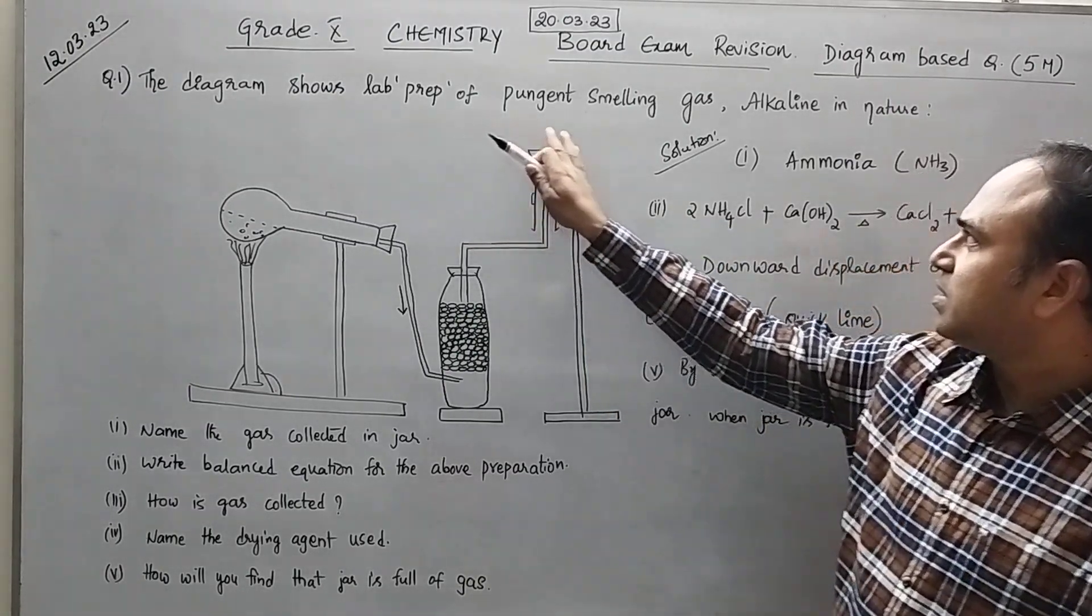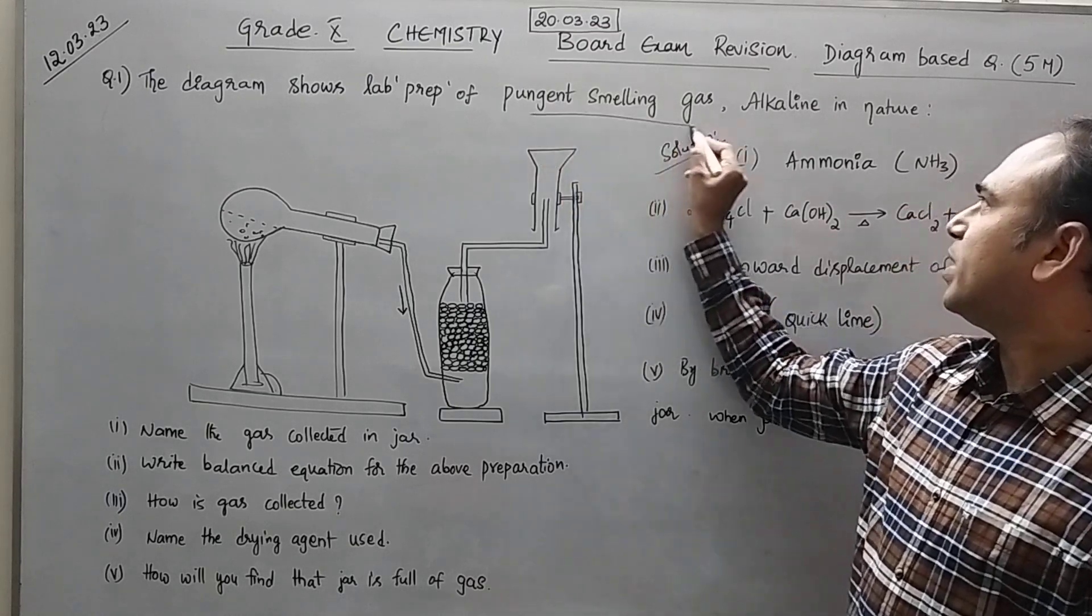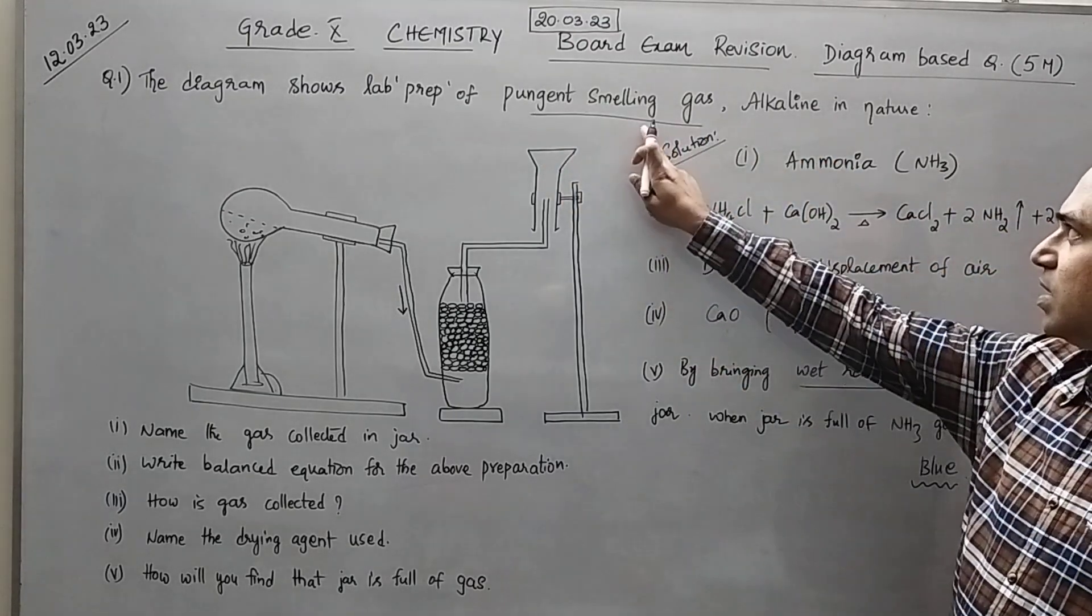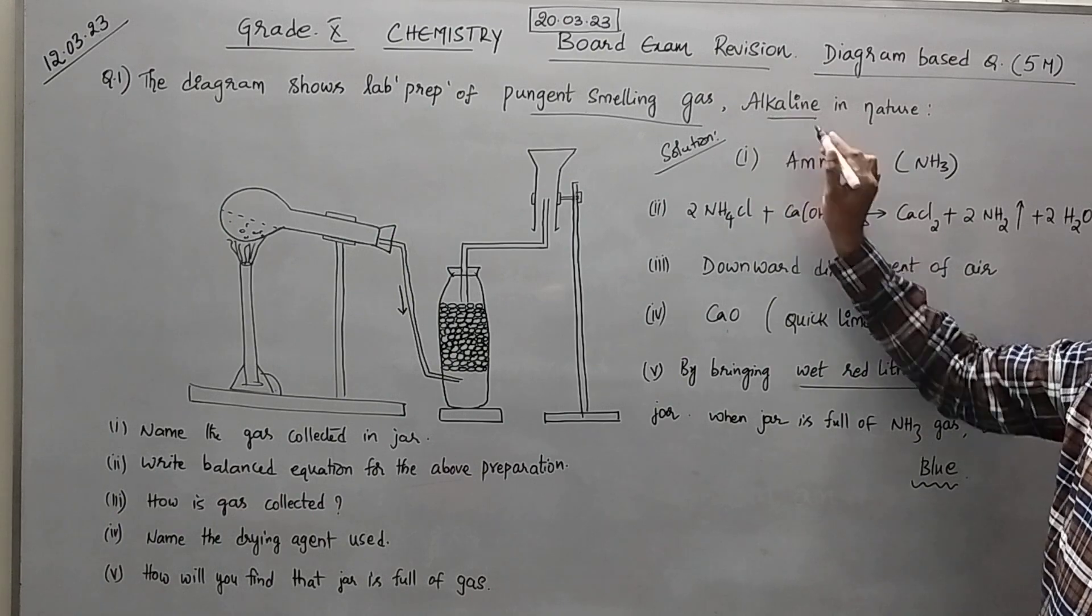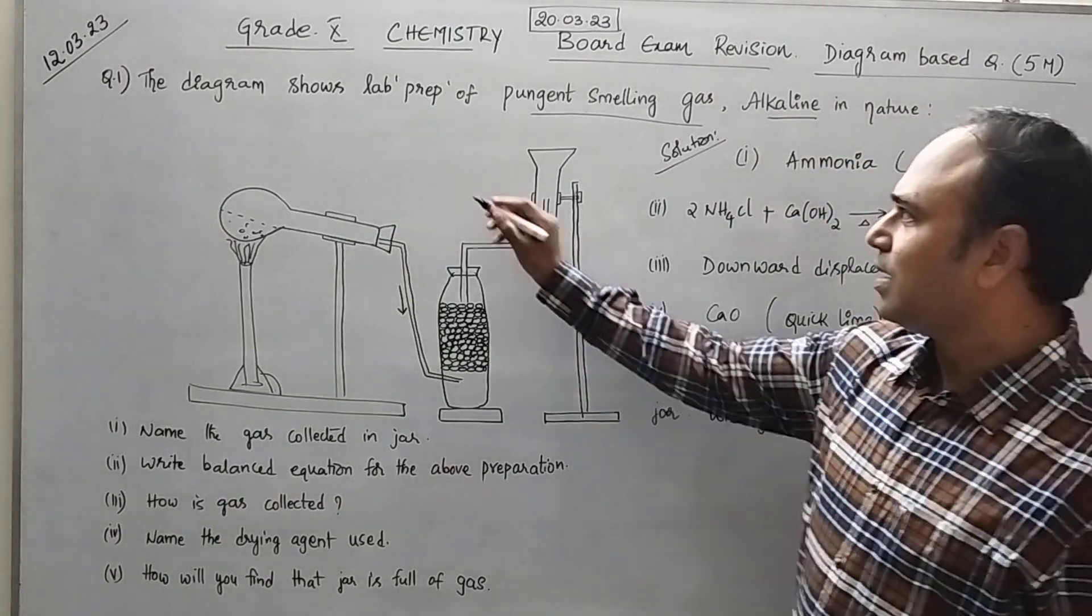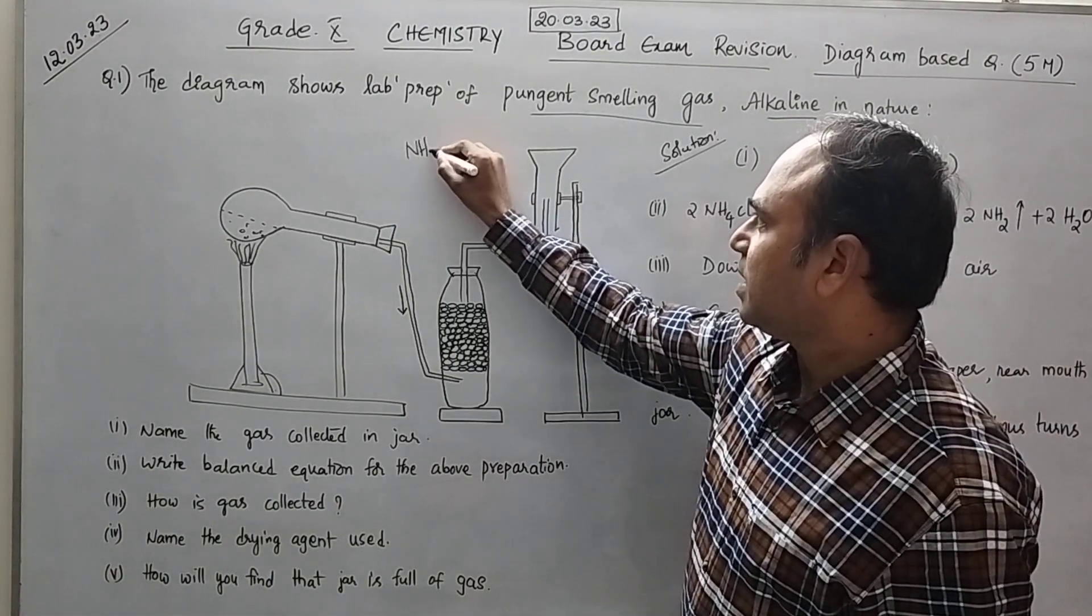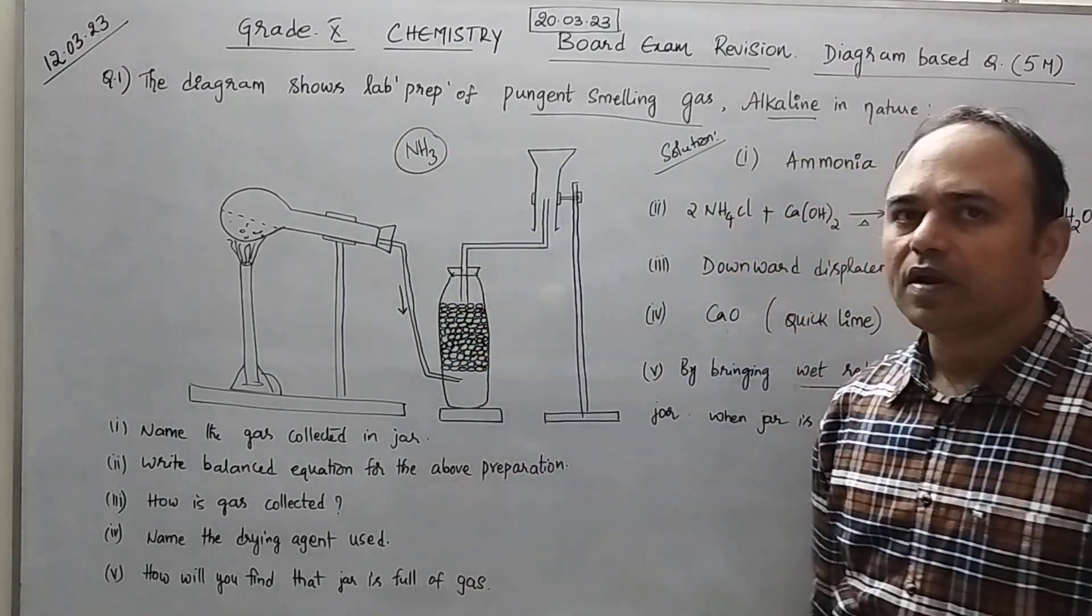The diagram shows laboratory preparation of pungent smelling gas. You have one keyword here: pungent smelling gas which is alkaline in nature. Then what you will understand? You will understand that this diagram based question is from ammonia.